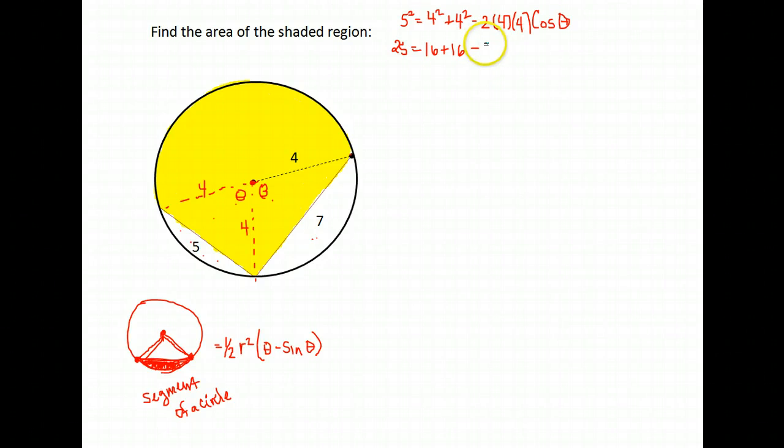I have 25 equals 16 plus 16 minus 32 cosine theta. I'm going to get cosine by itself, so I'm going to subtract the 16s and divide by negative 32.